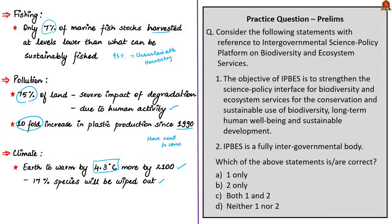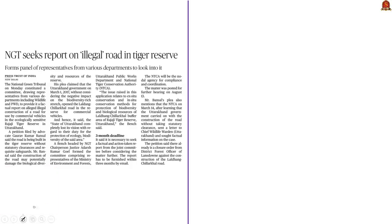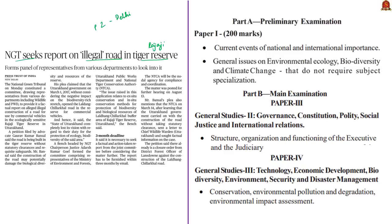The sixth and final news article of the day is about the National Green Tribunal seeking a report on alleged illegal road construction in Rajaji Tiger Reserve. This article appears on page 2 in the Delhi edition only. It is relevant in prelims under current events of national importance and general issues on environmental ecology and biodiversity, and in mains under General Studies Paper 2 under functioning of the executive, and General Studies Paper 3 under environmental conservation.